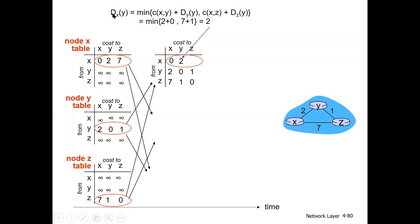This is dxy: the path cost minimum from x to y using the Bellman-Ford equation. The direct link cost cxy is used. Since dyy is the self-node cost, it equals 0. So cxy plus dyy equals 2 plus 0, giving a cost of 2.